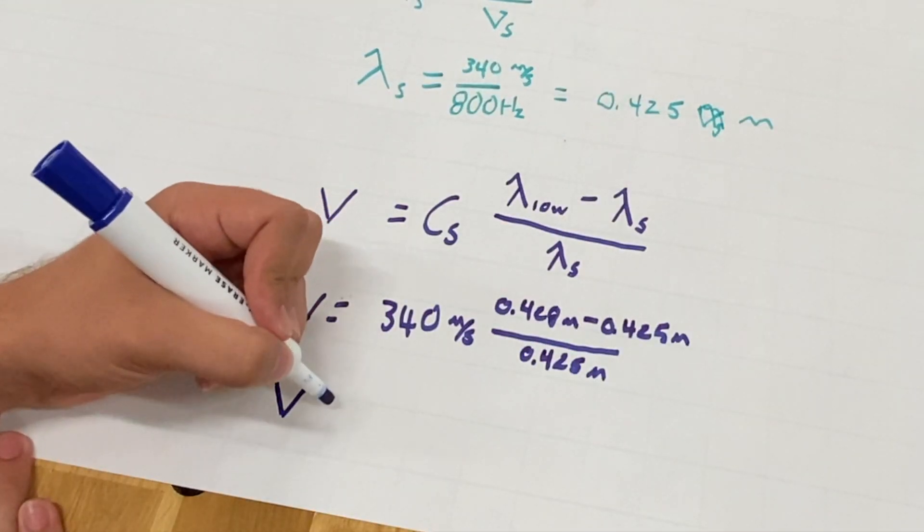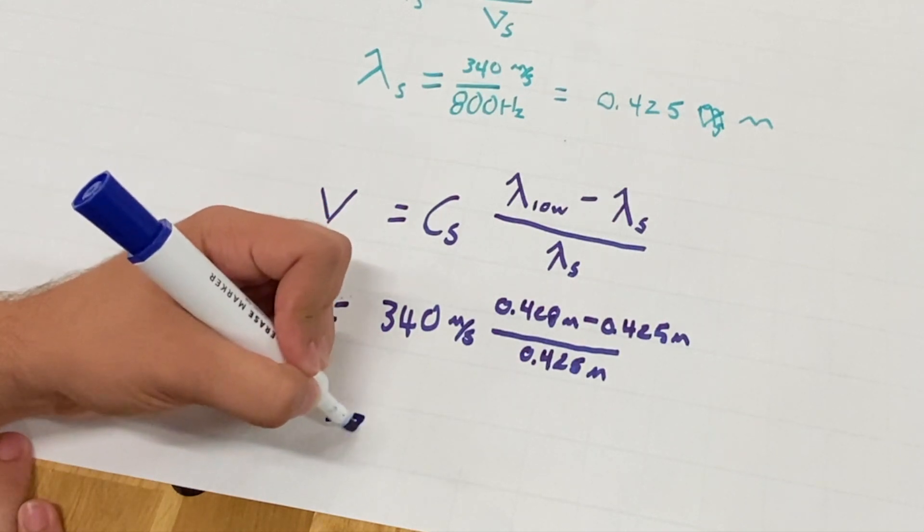If we crunch all the numbers, we find that the velocity is 2.383 meters per second.